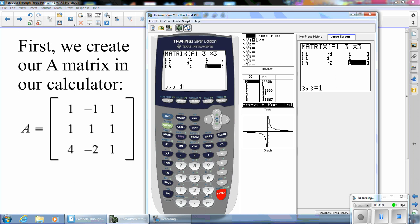Negative 2, and 1. Notice, when you use negatives, you use this negative symbol. This symbol here is for subtracting one number from another. To signify a negative number, you use this key right here. All right, now we've created matrix A in our calculator.